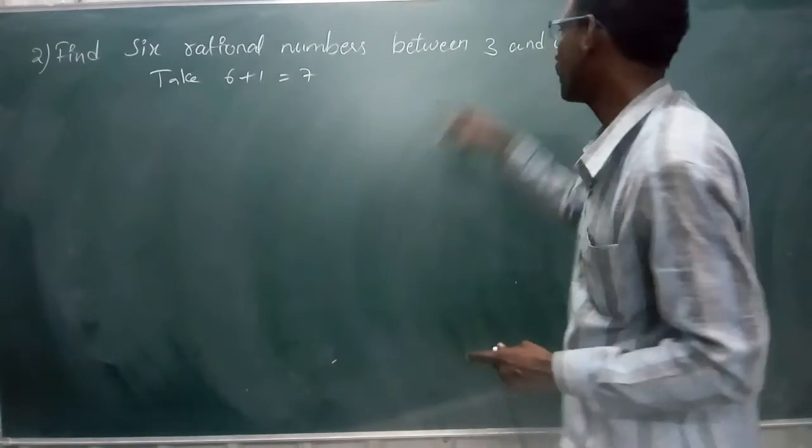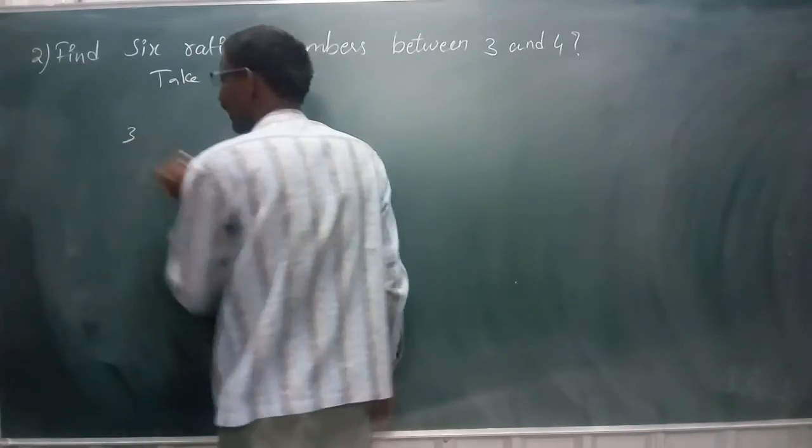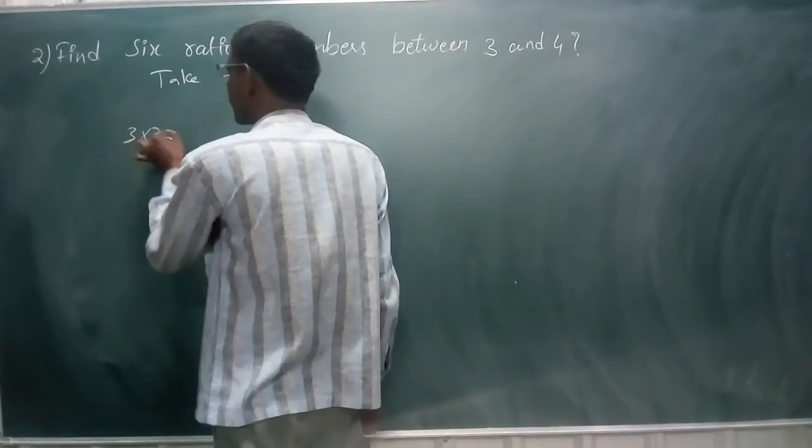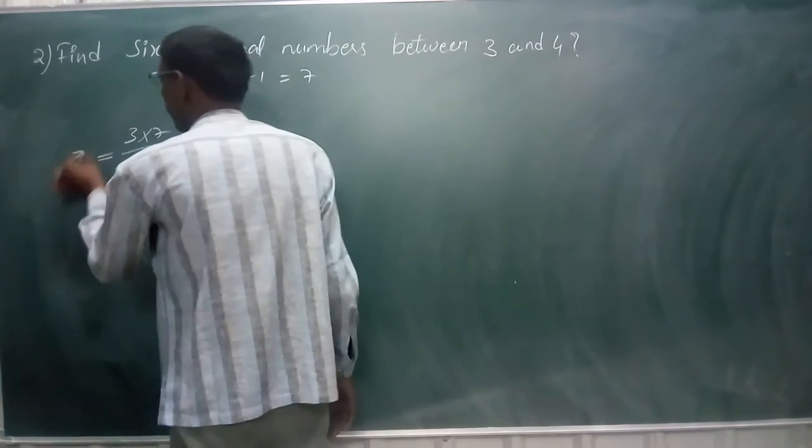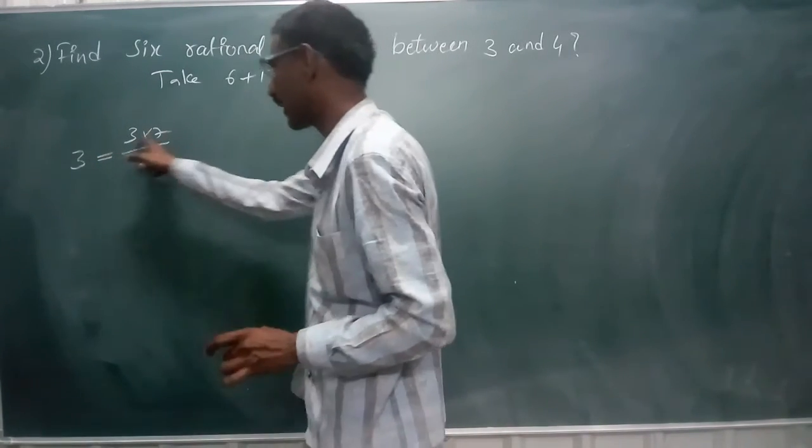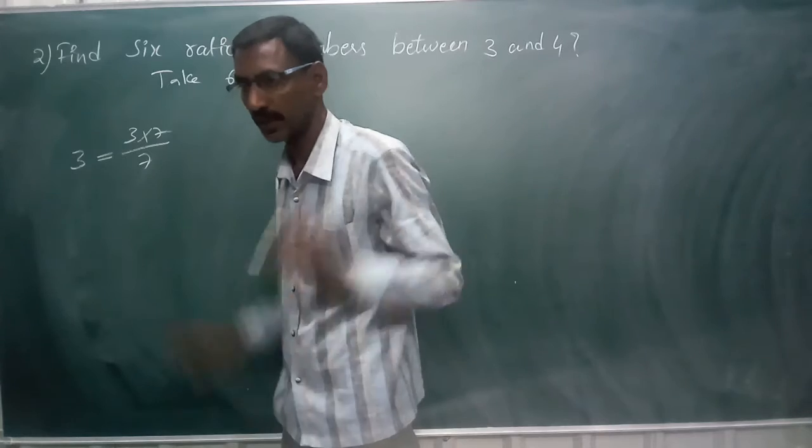That 7 should be multiplied and divided by 3. Take 3, multiply it by 7 and divide it by 7. This is nothing but 3 only. Keep in mind, because these two get cancelled, we get 3.